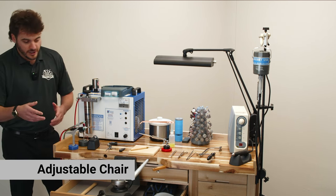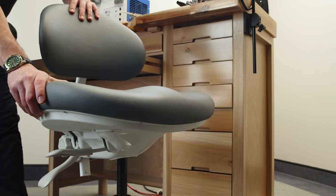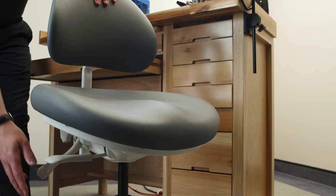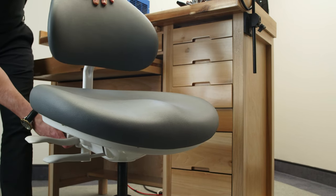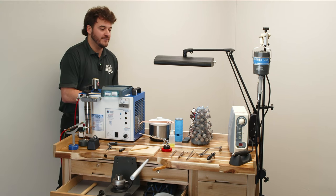Second up, we have our chair. Our chair is really going to be where you spend a lot of the time working at the bench. So you want something that's adjustable, something that's going to form fit to exactly what you need, and that's going to be specific. That's going to be a little bit different for every individual person.